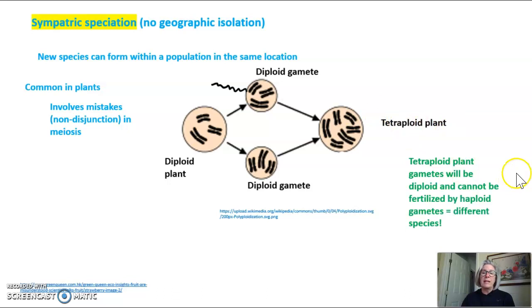This tetraploid plant gametes would be diploid when it went through meiosis, and they would not be able to be fertilized by haploid gametes that would be produced by the original diploid plant. That makes them different species.